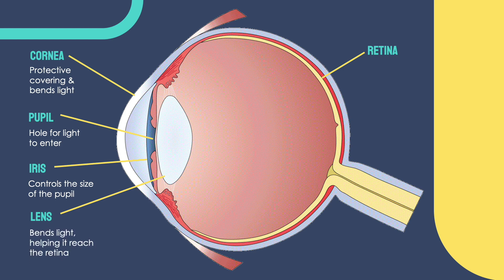Right behind the iris lies the lens. The lens can change shape with the help of its surrounding muscles. By changing shape, the lens refracts — meaning redirecting or bending the light rays — helping it to reach the retina. The retina is the innermost layer of the eye and contains cells that can detect light. These cells then transmit the signal through the optic nerve to the brain, thus allowing us to see.